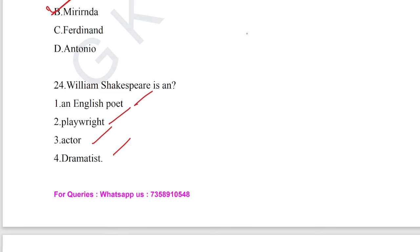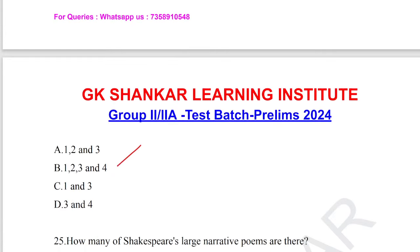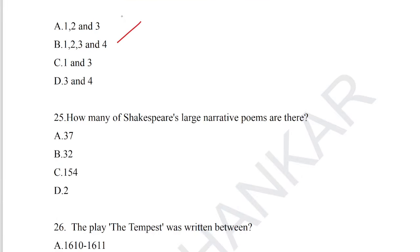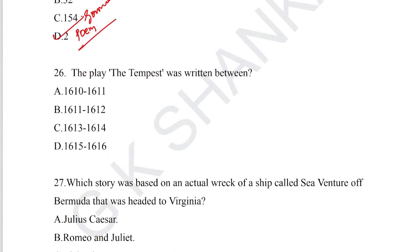Question number 24: William Shakespeare was an English poet, playwright, actor, and dramatist — all are correct. Option B is the correct answer for question number 24. Question number 25: how many of Shakespeare's large narrative poems are there? Option D — two long narrative poems — is the answer. Shakespeare also wrote 154 sonnets and 37 plays.